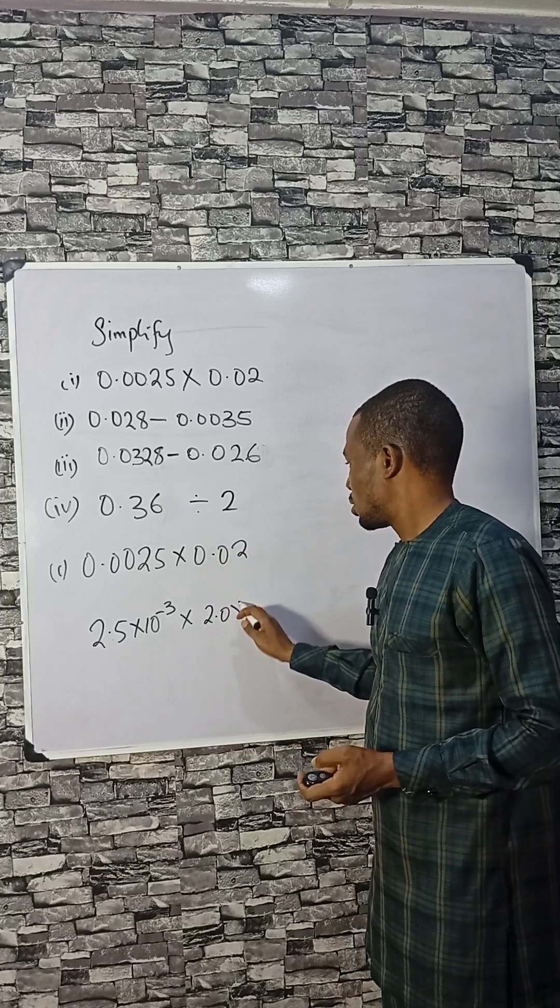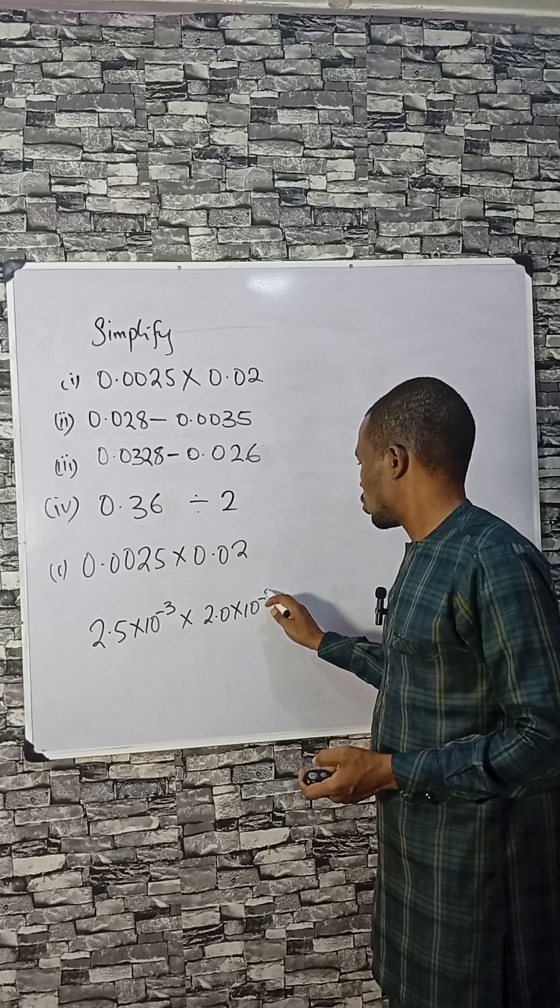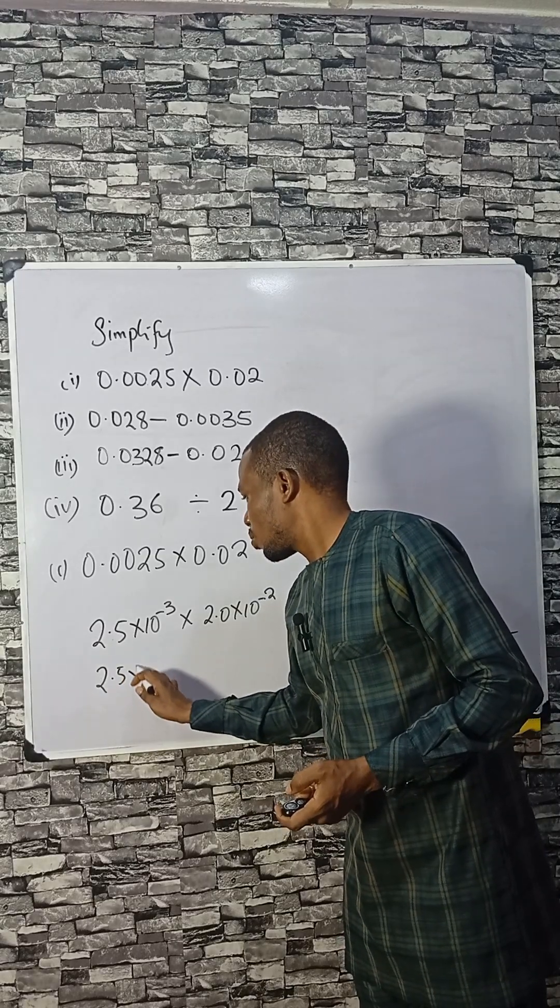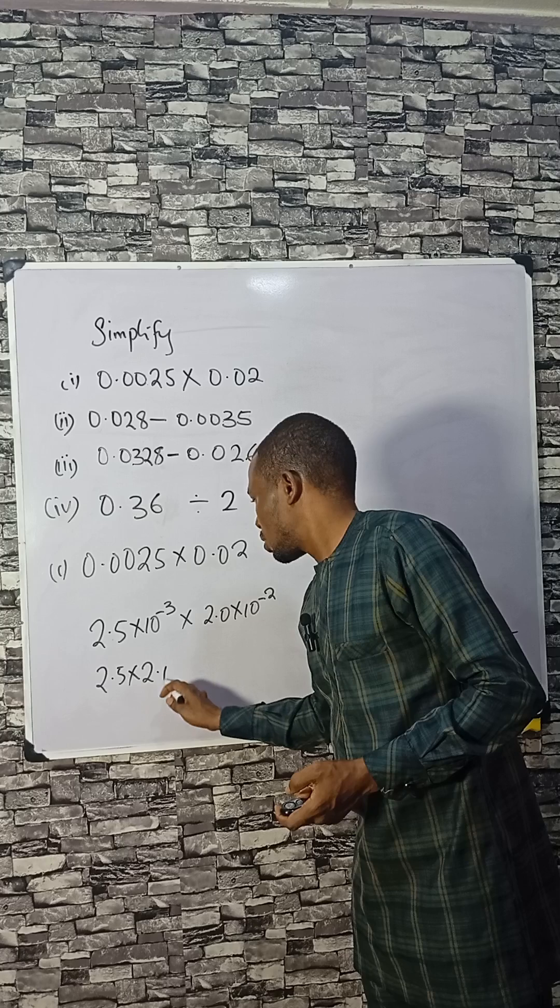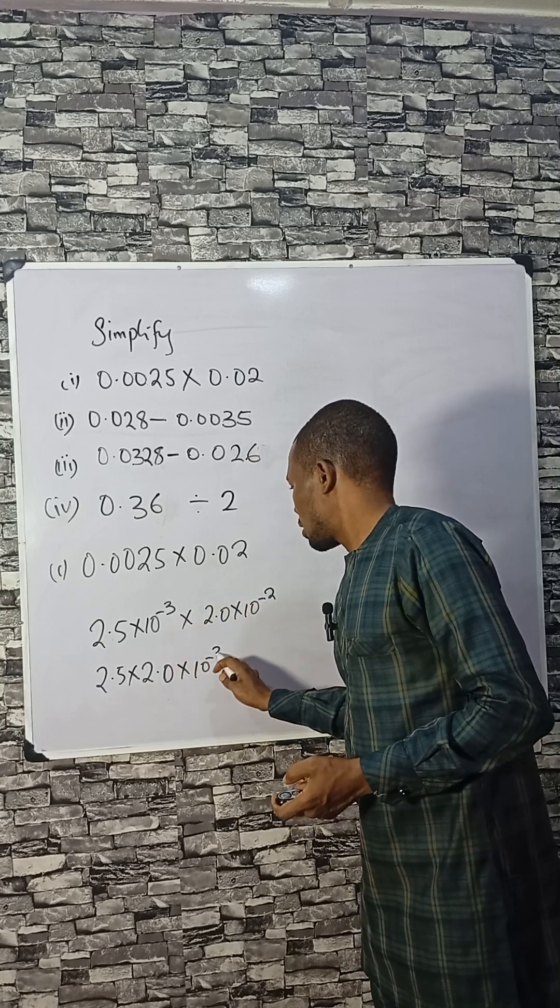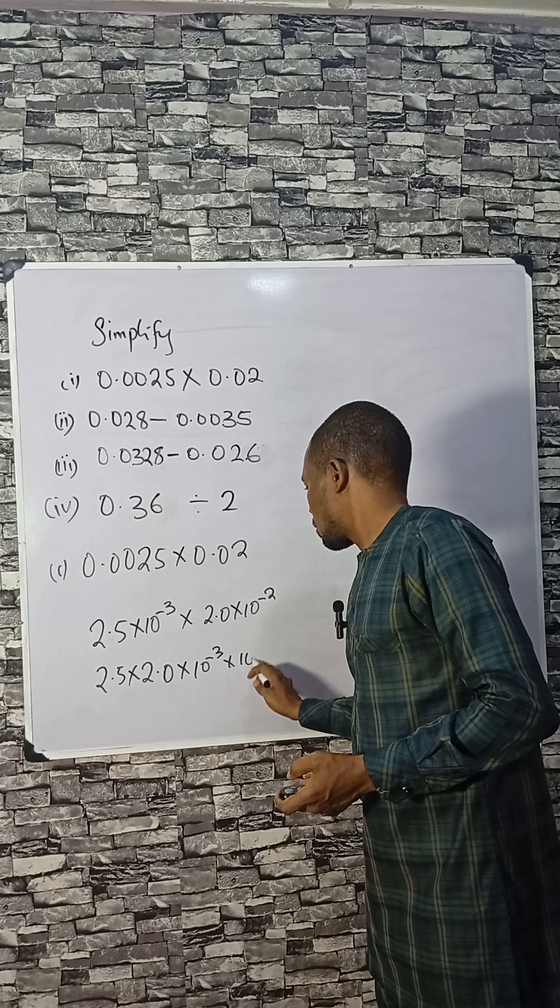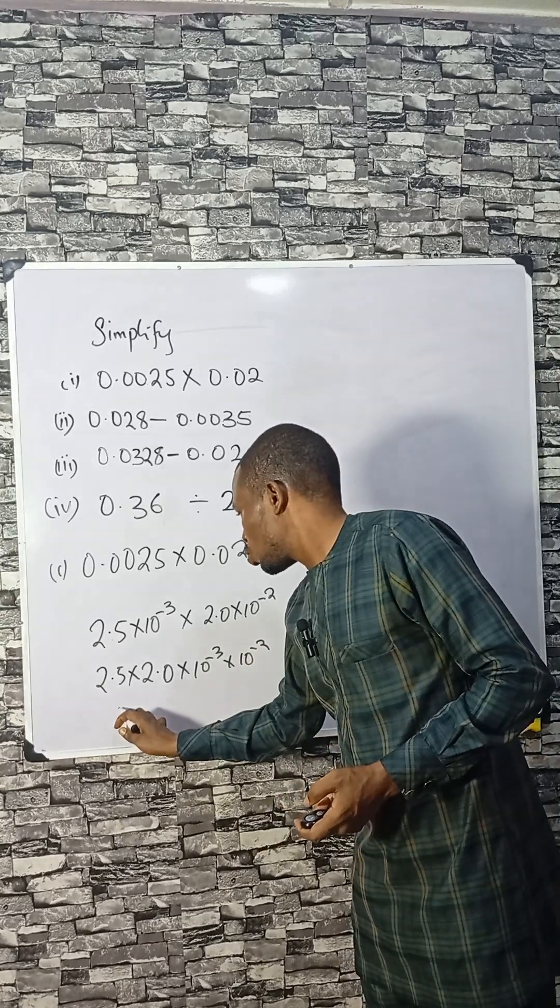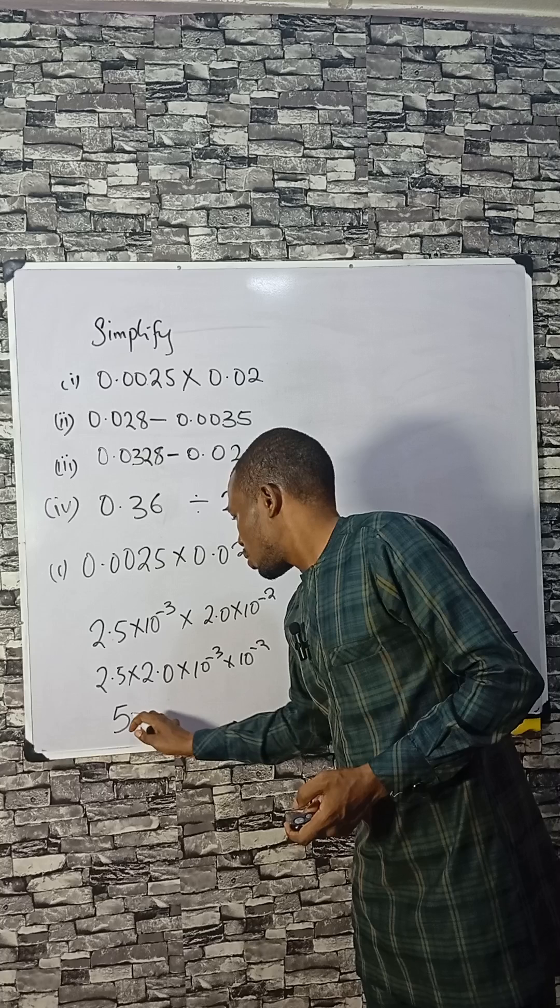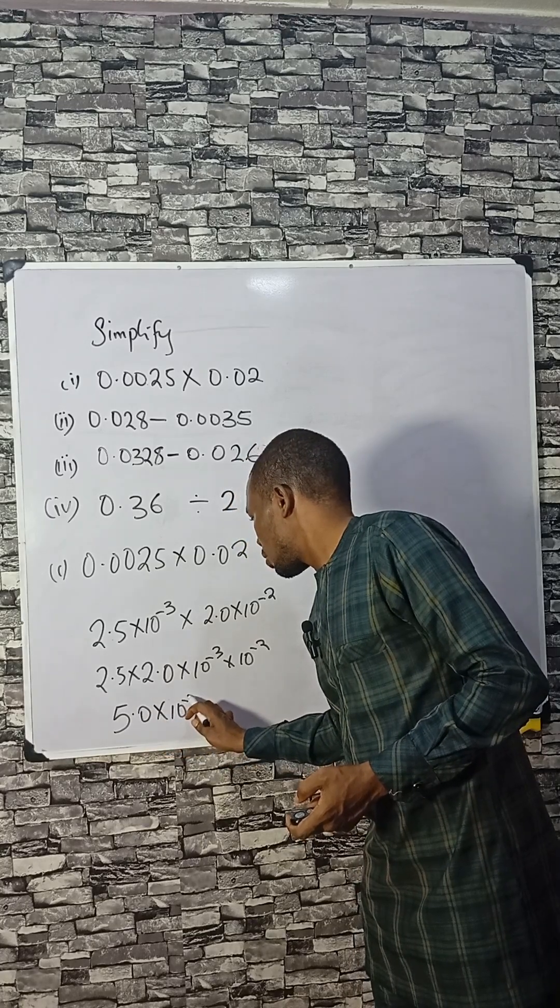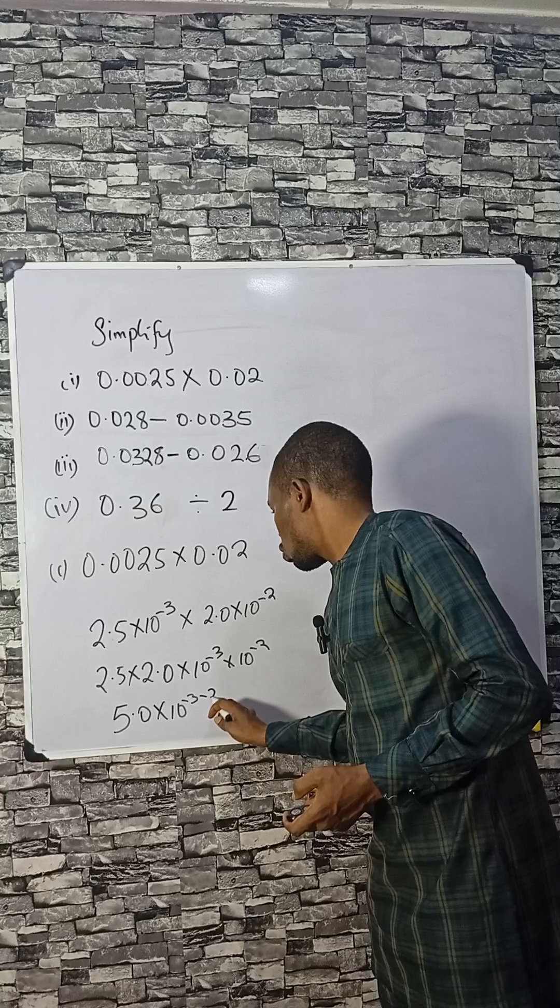You see, 2.5 can multiply 2.0, then this will multiply themselves from the laws of indices. 2.5 times 2, that is 5.0, and 10 raised to the power minus 3 minus 2.